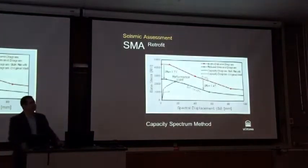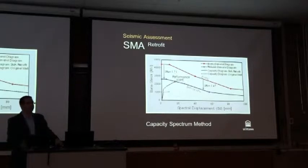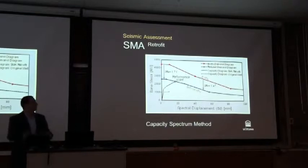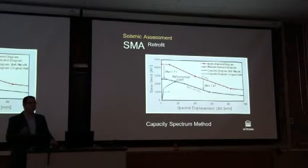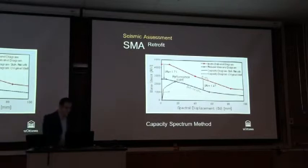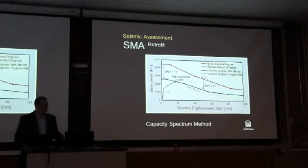One characteristic of these pre-1970s structures, which are the structures we want to focus on, is that they lack seismic detailing. As you may know, seismic detailing and seismic provisions appeared in the 1970s. So buildings prior to the 1970s lack any confinement reinforcement, lap splice reinforcement, and other detailing to prevent brittle failure and to promote more flexible response.